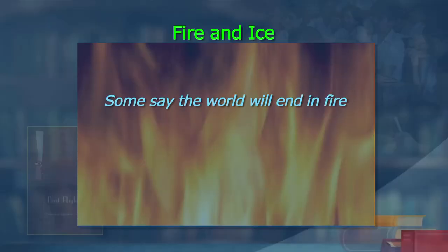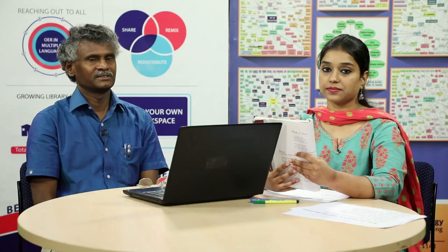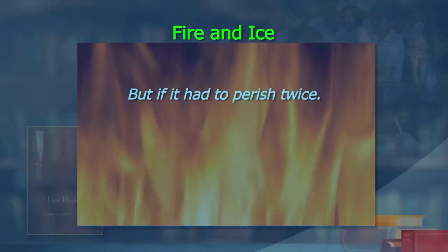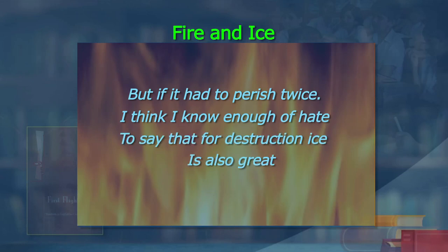We have read the poem more than twice. Now let us understand a bit more. Let us list out how the world can come to an end, or how the world can be destroyed by fire and ice. You have your pen and paper with you. Look at the first one - how will the world end in fire? How can it be destroyed by fire?